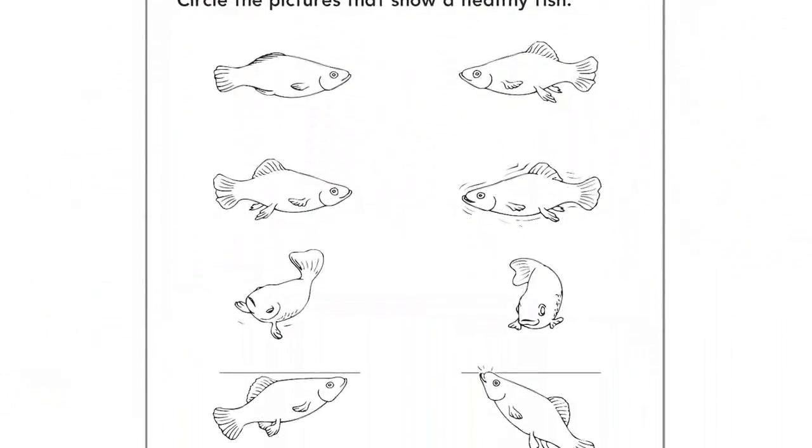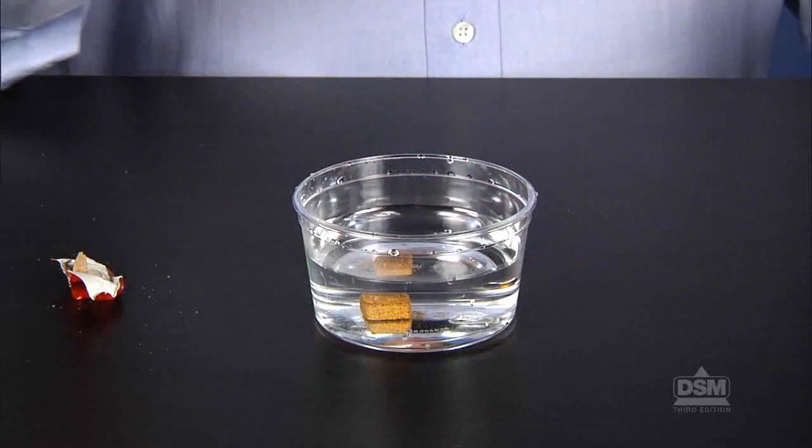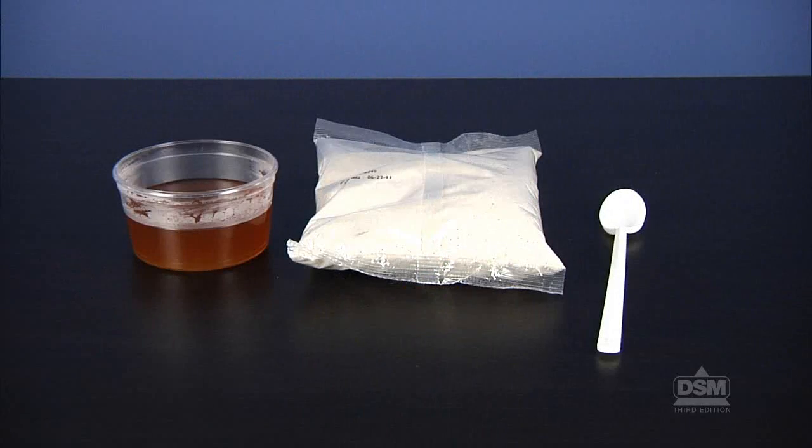To prepare for this activity, make a copy of Activity Sheet 8, parts A and B for each student. Dissolve half of a beef bouillon cube in a mug of warm water. Place the mug of bouillon, a bag of sand, and a plastic spoon at a distribution station. Do not feed the fish on the morning of the activity so that they will respond to the smell and presence of food.